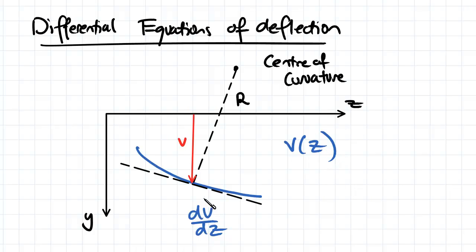So if we look at our beam here, it's going to have a slope of dv/dz. It's also going to have a distance r from what's called the center of curvature, and then the rate of change of its slope, dv/dz, is going to be its curvature, which we learned was kappa in the bending topic.